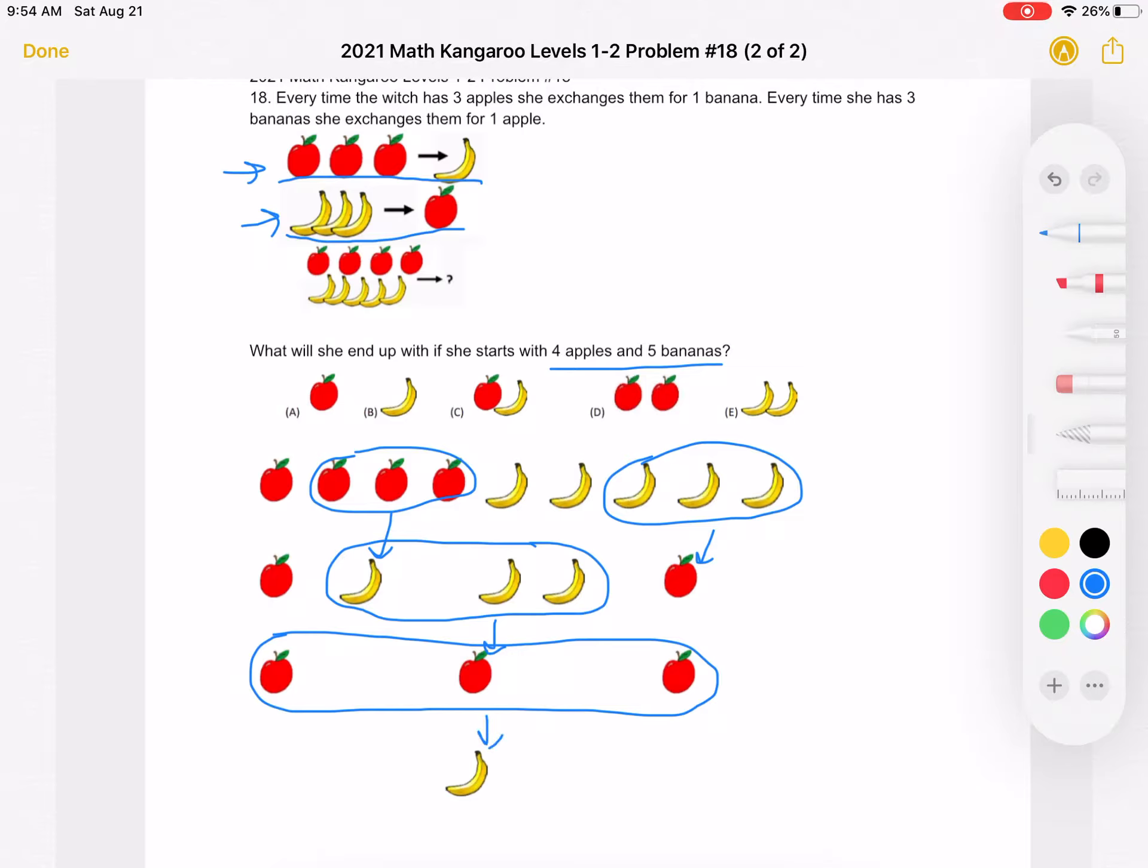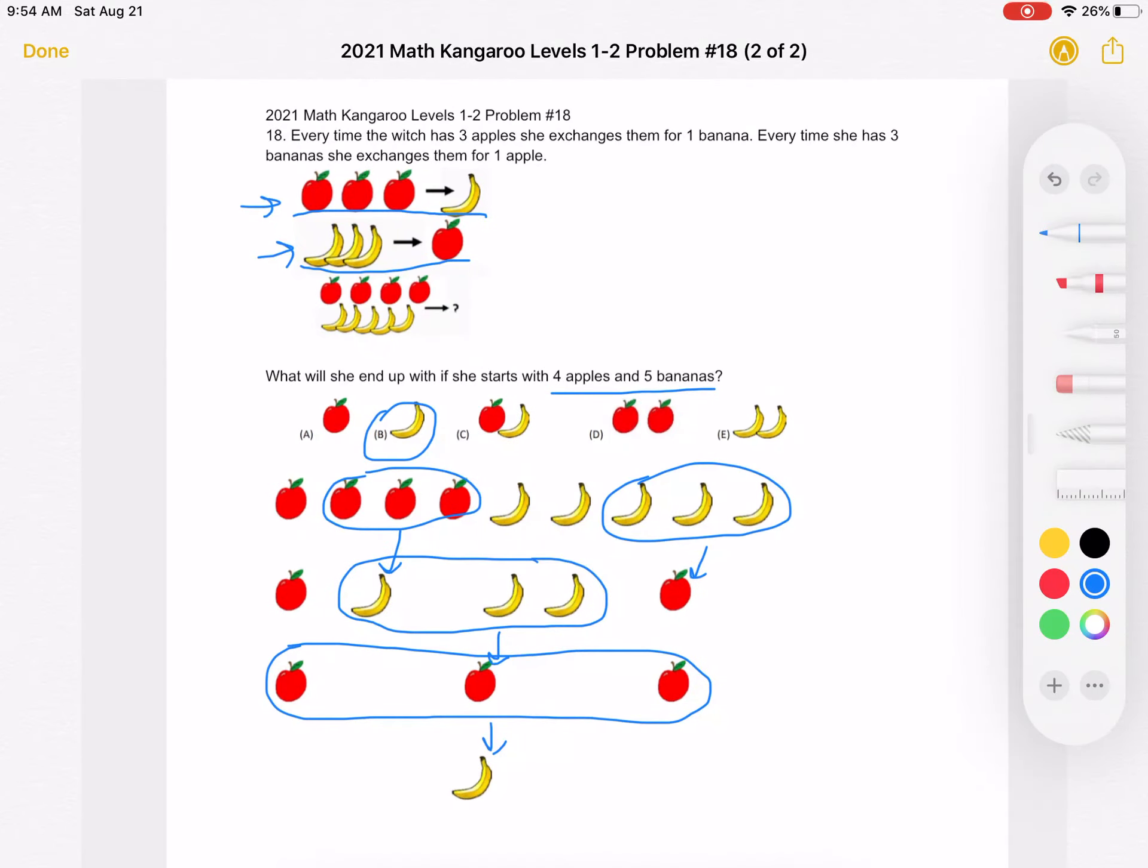So what does she end up with? She ends up with a banana which is answer choice B. Thank you so much for watching and please subscribe if you would like to see more videos.